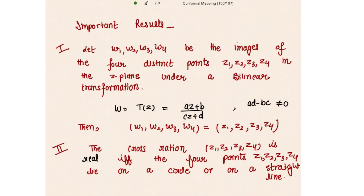Before starting the proof of this theorem, let's read two important results. First, let w1, w2, w3, w4 be the images of four distinct points z1, z2, z3, z4 in the z-plane under a bilinear transformation w = (az + b)/(cz + d), where ad minus bc is non-zero. Then the cross ratio of w1, w2, w3, w4 is equal to the cross ratio of z1, z2, z3, z4. Both cross ratios are equal.